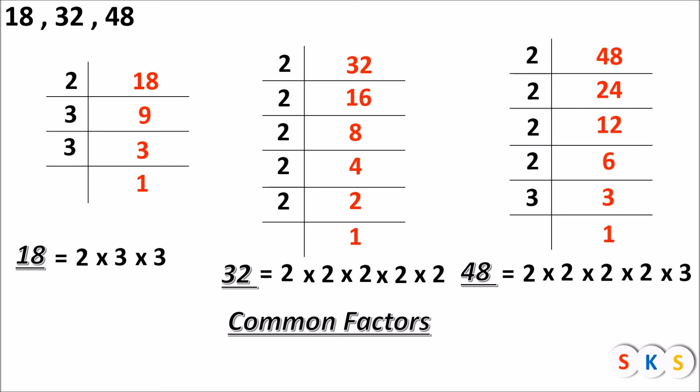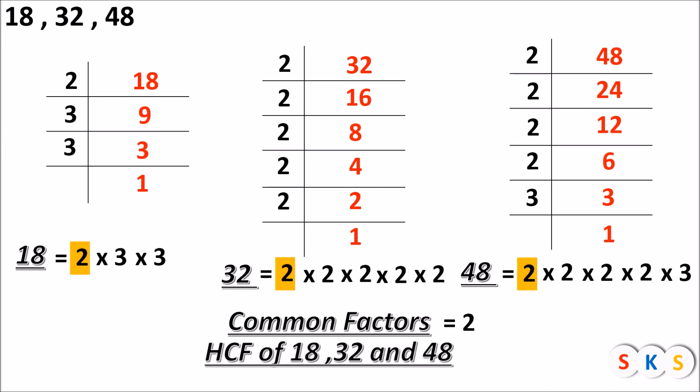Now, we will find the common factors — factors which are there in all 3 numbers. What is common over here? You can see that 2 is common. Anything else which is there in all? No. So, the common factor of all 3 numbers is 2. Therefore, the HCF of 18, 32, and 48 is 2.